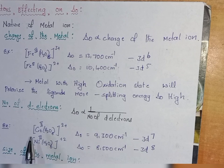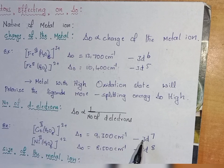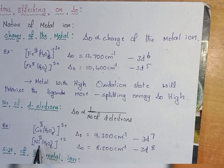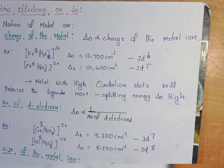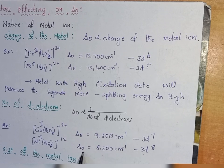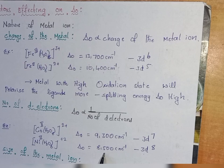For example, the hexa aqua cobalt complex with +2 oxidation state (d7 system) has delta O of 9,300, whereas the hexa aqua nickel complex with a d8 system has delta O of 8,500.